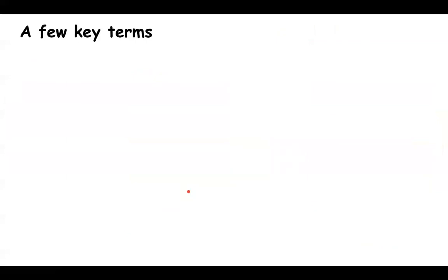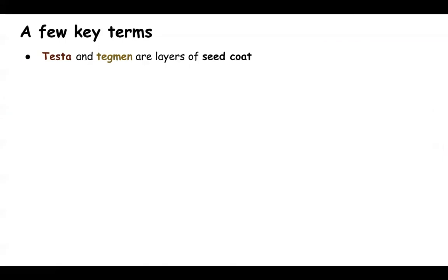There are a few key terms to remember. Testa and tegmen are the two layers of a seed coat. A seed has a covering over the cotyledons: the outermost generally colored part is the testa, and the inner thin membranous layer is the tegmen.